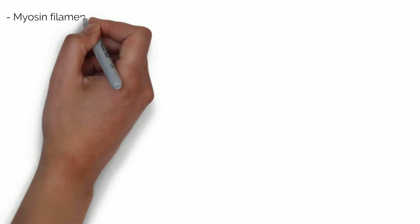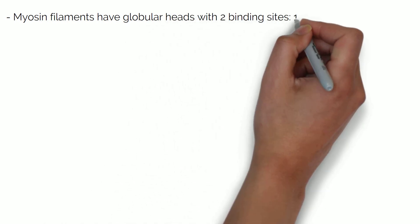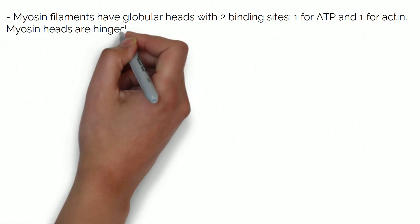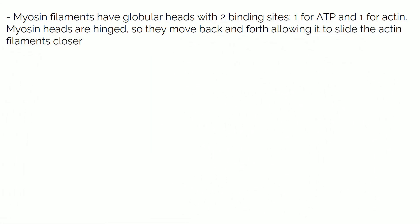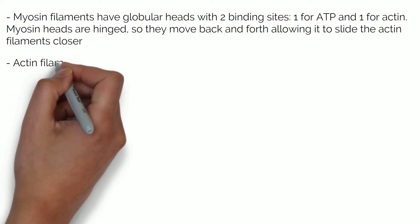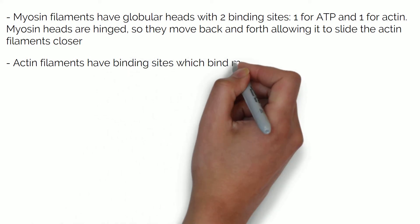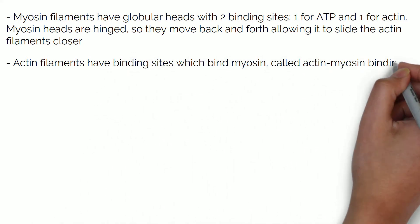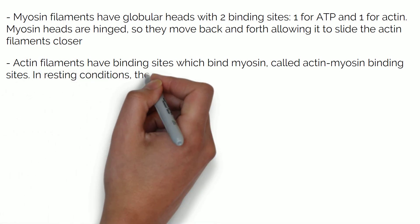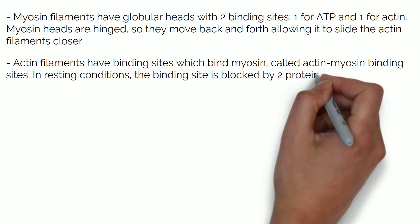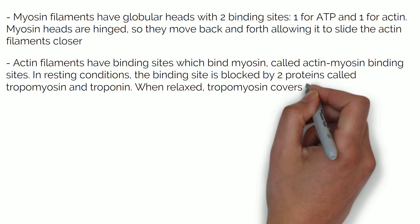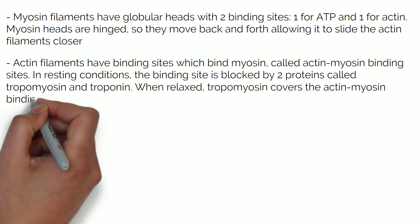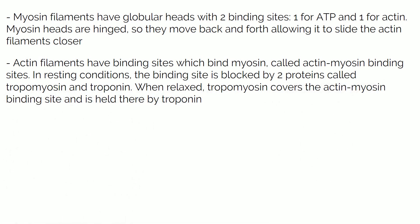Myosin filaments have globular heads with two binding sites: one for ATP and one for actin. Myosin heads are hinged so they move back and forth, allowing them to slide the actin filaments closer. Actin filaments have binding sites which bind myosin, called actin-myosin binding sites. In resting conditions, the binding site is blocked by two proteins called tropomyosin and troponin. When relaxed, tropomyosin covers the actin-myosin binding site and is held there by troponin.